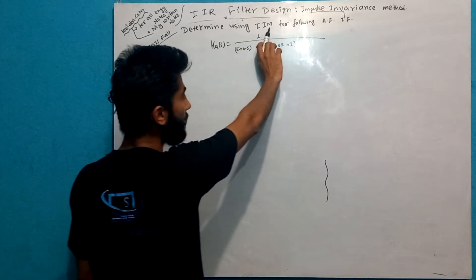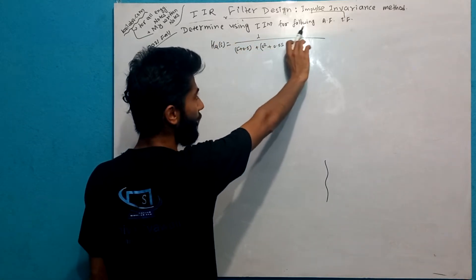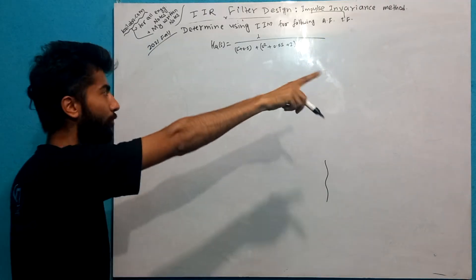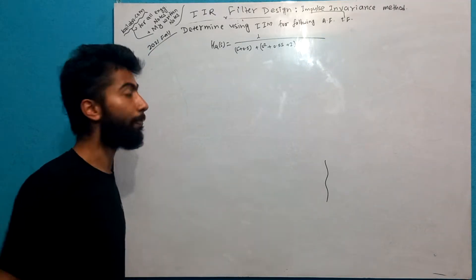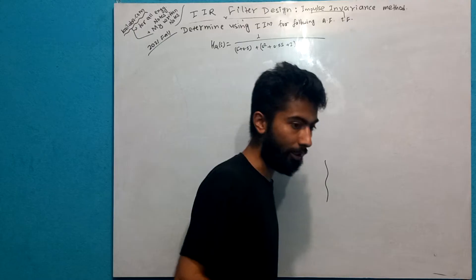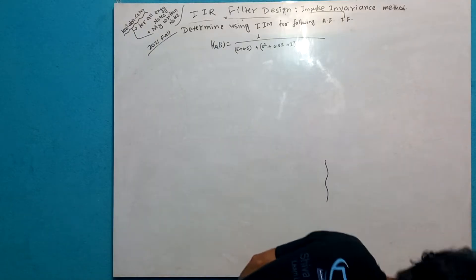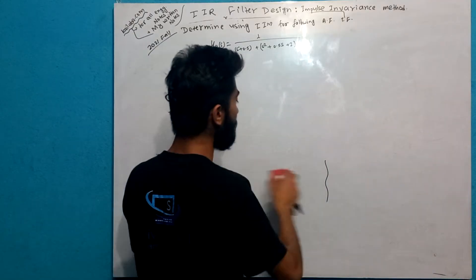Determine using the impulse invariance method for the following analog filter transfer function. Now, what do we need to do? We will use the partial fraction method.